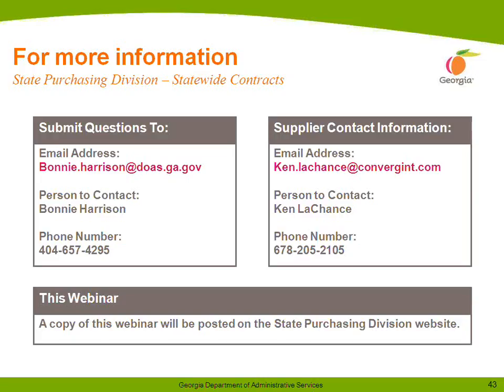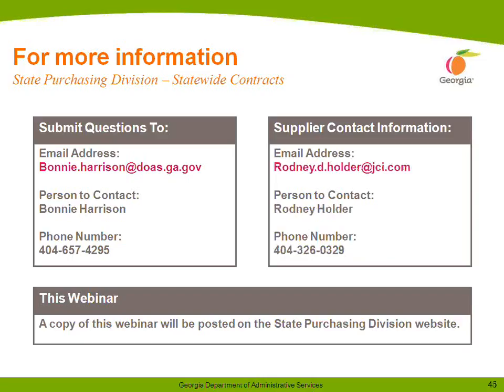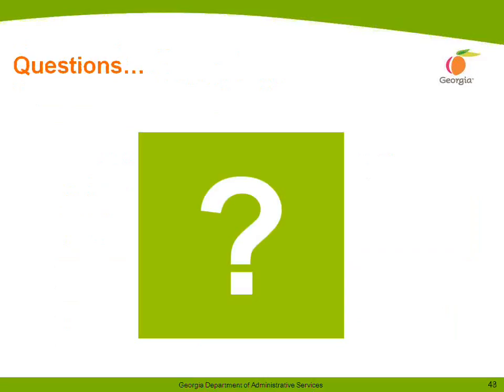If you have any questions or concerns or would like any additional information, you can see my contact information listed on your screen. For Convergent, you'll see the contact information for Ken LaChance. You'll also see contact information for Wilt Corbin from GC&E, Rodney Holder from Johnson Controls, Matt Lezinski with Presidio, and Bob Kopetsky with TIG. This webinar — the presentation and also the recording — will be posted on our DOAS website. All of our questions and answers from this webinar will be put in writing and also posted on our website. At this time, we're going to open up the webinar for any questions that you all may have. If you have questions, please enter those via the chat function on your control panel.